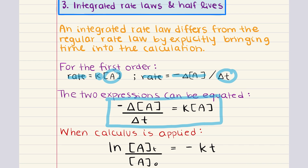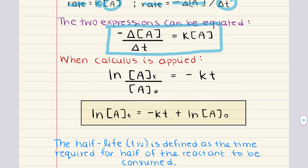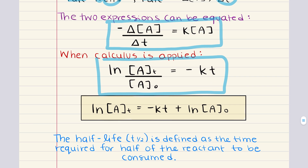This equation describes how the concentration of reactant A decreases over time. To integrate this expression and include time, we have to use calculus. We're not going to go over how to do that, but when we apply calculus, the equation becomes the following: the natural logarithm of the concentration of A at time t divided by the initial concentration of A is equal to negative K, where K is the rate constant, multiplied by time.